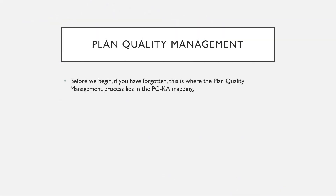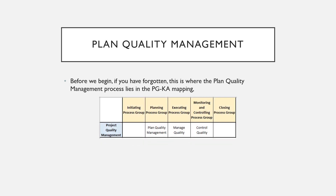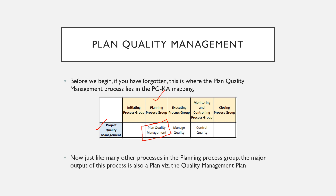Let's recall where Plan Quality Management fits in the overall scheme of things. In the PGKA mapping, we are talking about the Project Quality Management knowledge area and the planning process group. There is only one process in this mapping, and that is Plan Quality Management. This is what we are talking about — the outputs of this process. Just like many other processes in the planning process group, the major output of this process is also a plan — the Quality Management Plan.